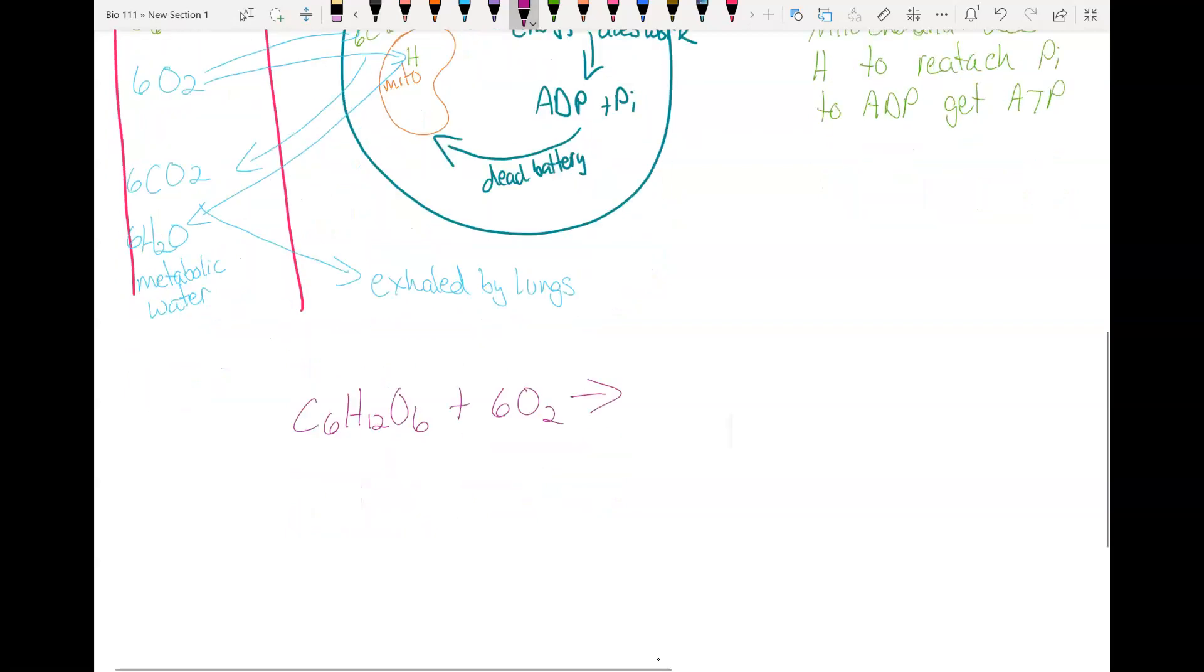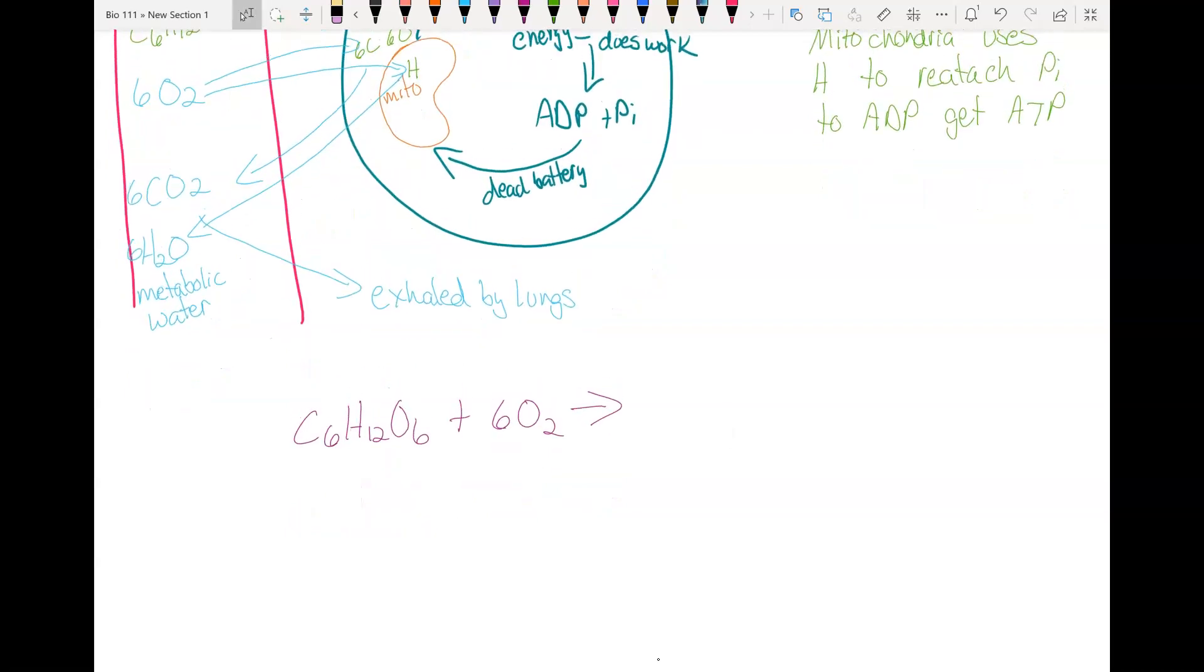Your cell breaks down the glucose and extracts the hydrogen. You're going to use the hydrogen to make ATP. Then the oxygen is going to combine with the carbon and oxygen left over from the glucose, and you're going to get 6CO2. That's what three of the oxygens will do.